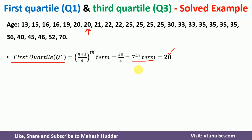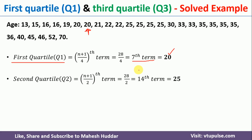Similarly, to find the second quartile Q2, we use Q2 equals the (n+1)/2th term. That is 28 divided by 2, which is the 14th term. Counting to the 14th term in the data, that value becomes Q2, which is also called the second quartile, equal to 25.